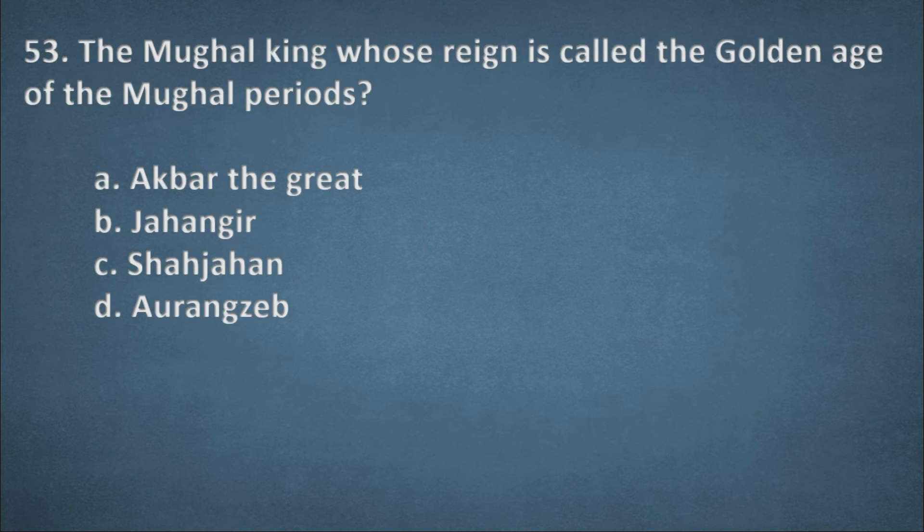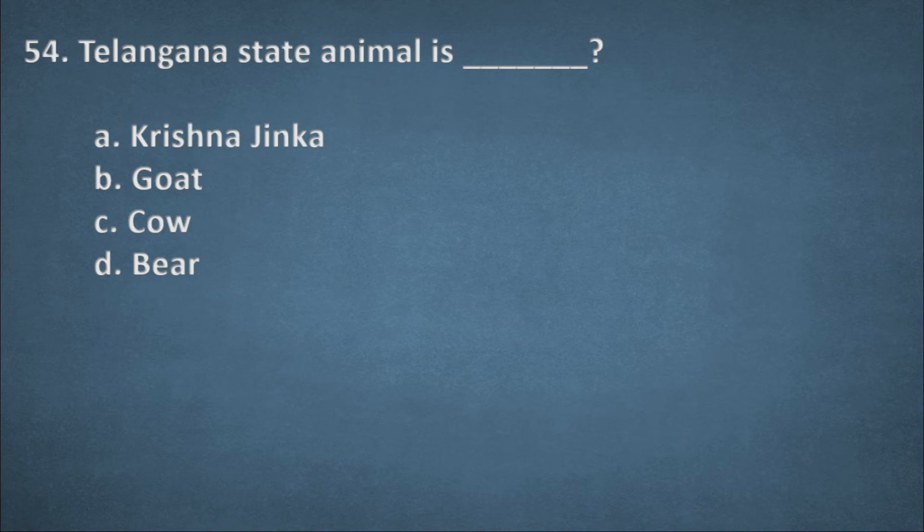Next one. The Mughal king whose reign is called the golden age of the Mughal greats. Options: Akbar the great, Jahangir, Shah Jahan, Aurangzeb. The right option, C, Shah Jahan. Next one. Telangana state animal is. Options: Krishna Jinka, Goat, Cow, Deer. The right option, A, Krishna Jinka.